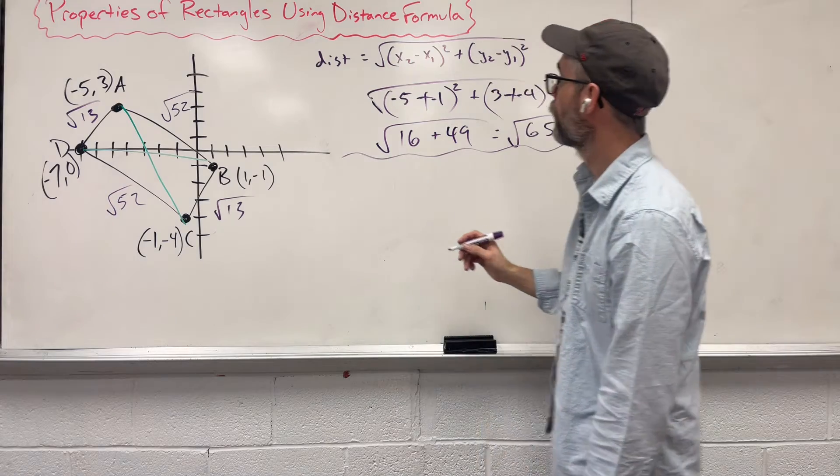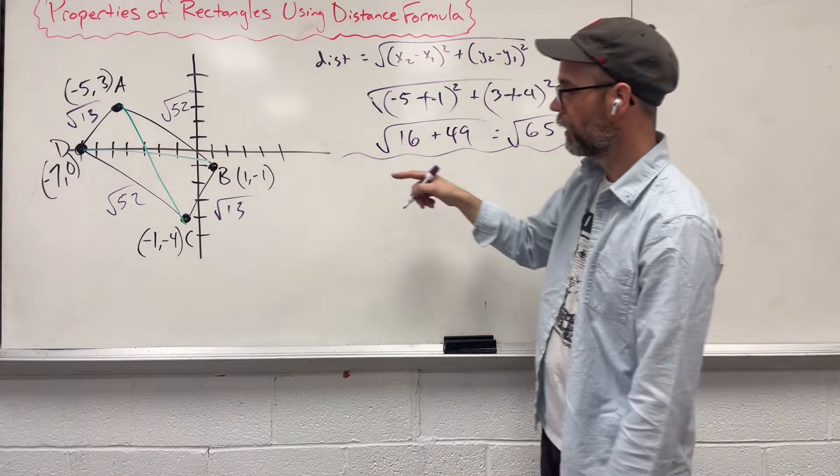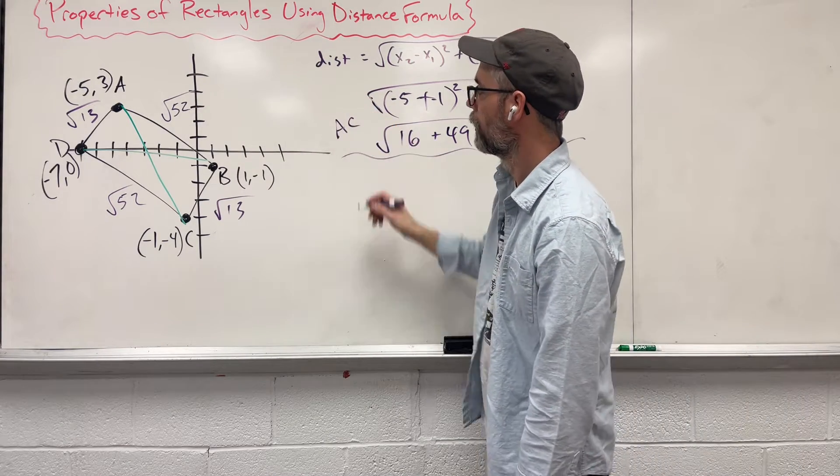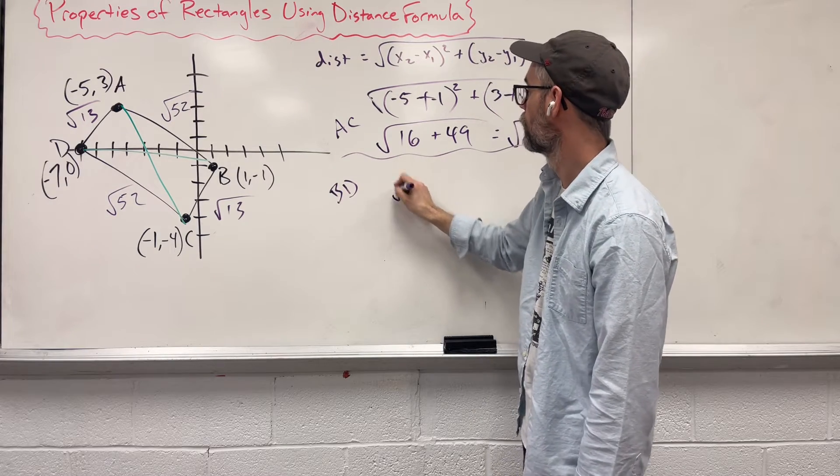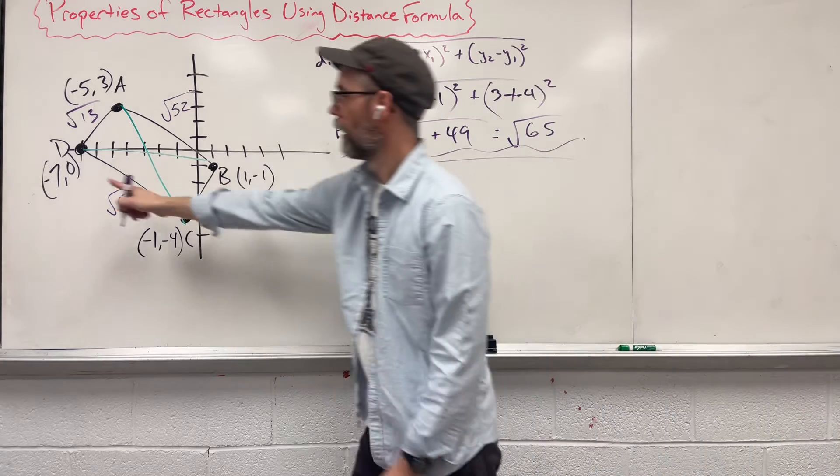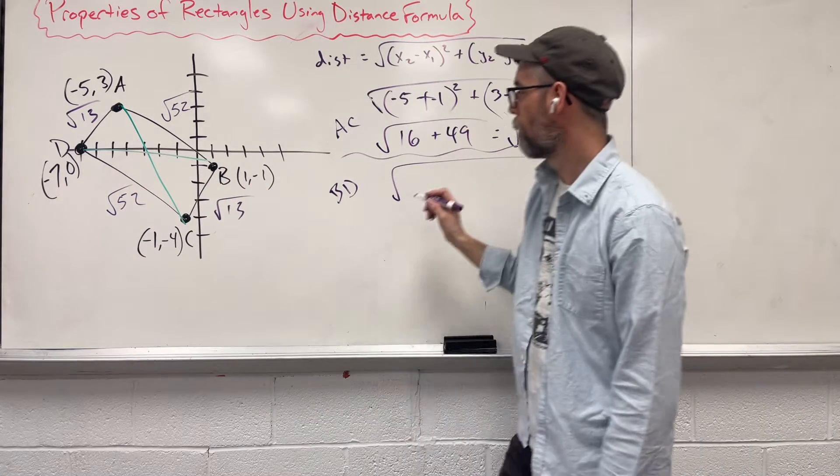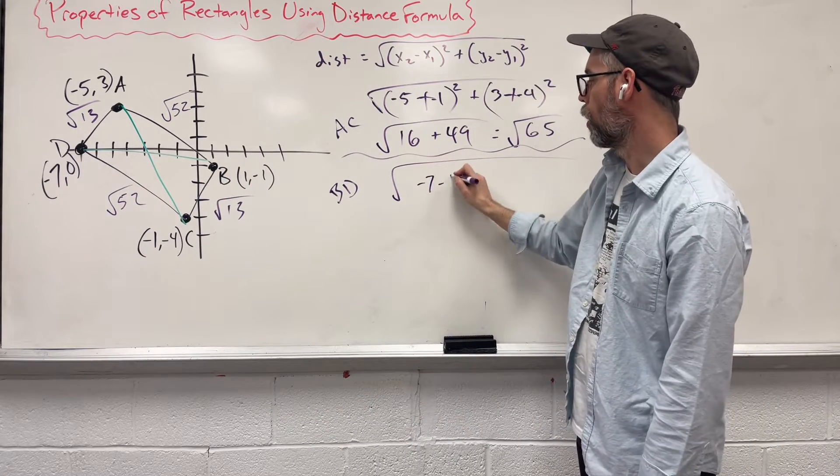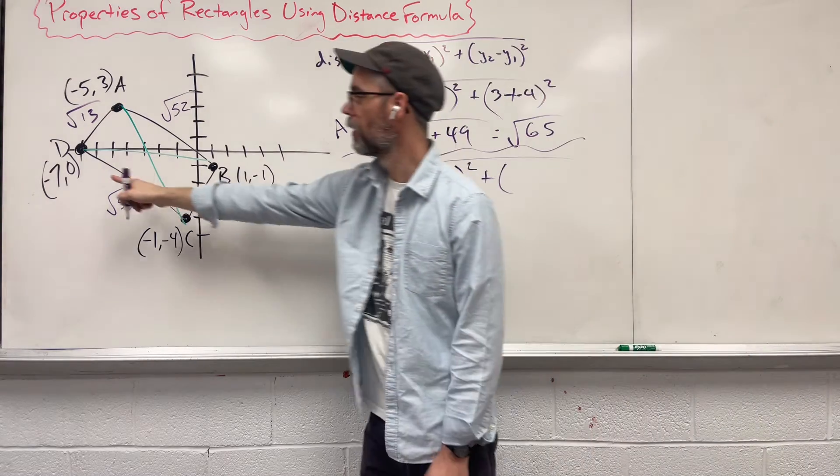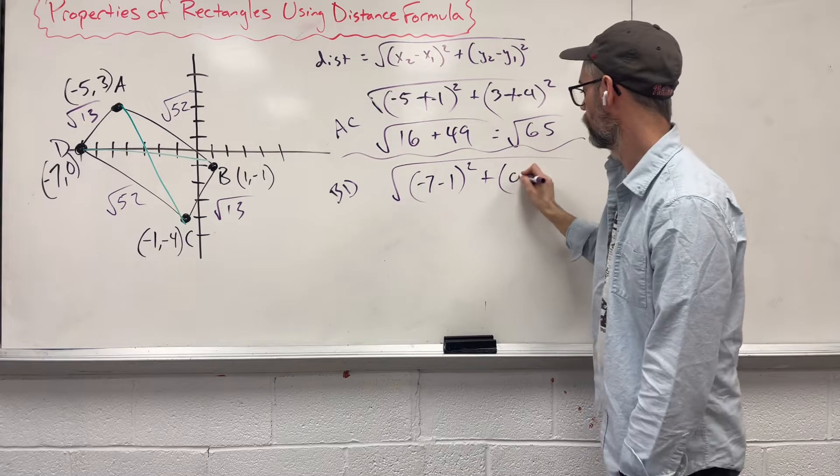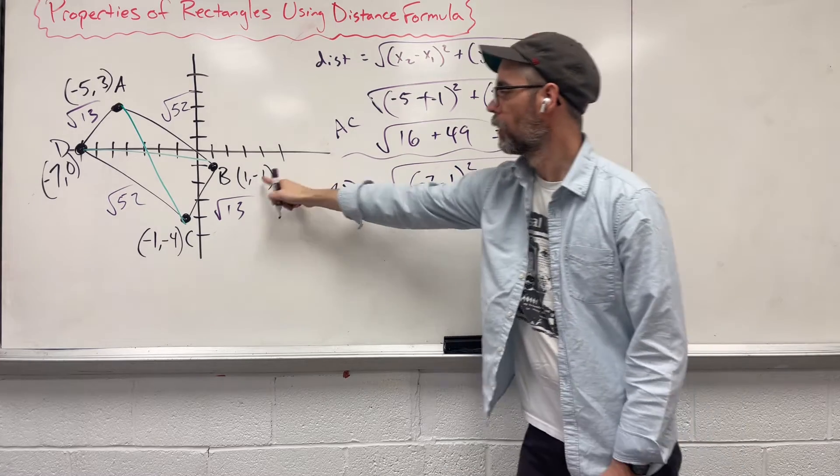Can we do it one more time? I think so. So we just did AC. Let's do BD. X's, negative 7 minus 1, square it. And let's do our y's, 0 minus negative 1, square it. Turns to a plus.